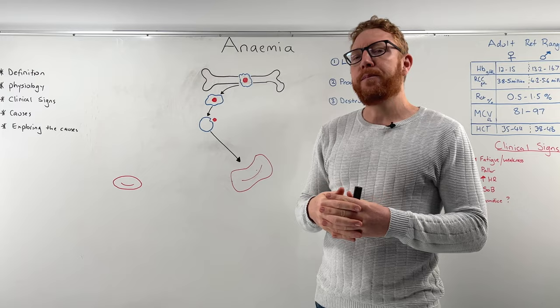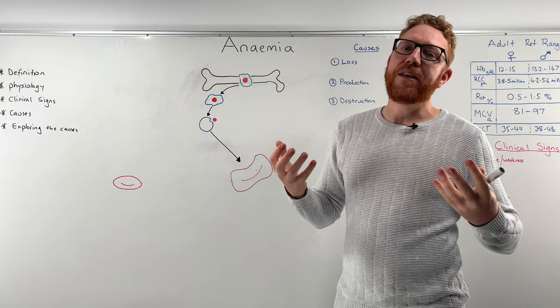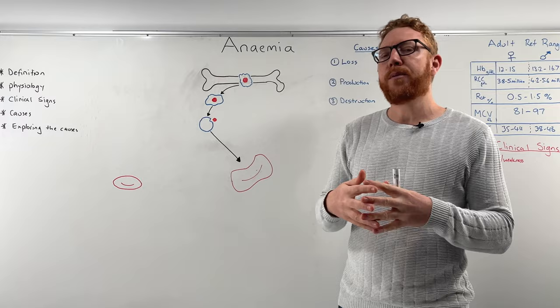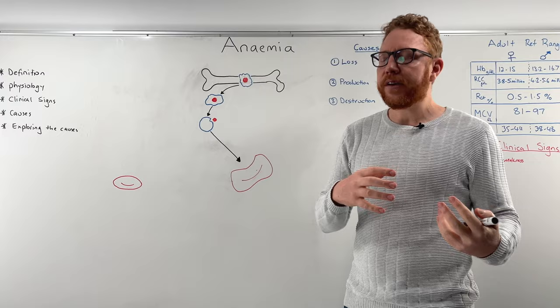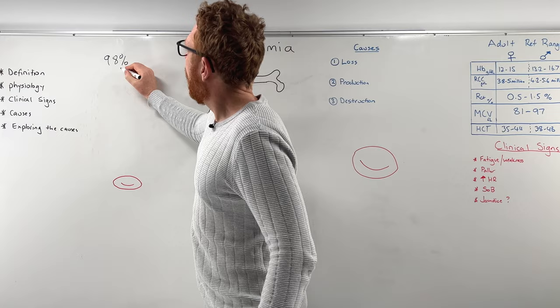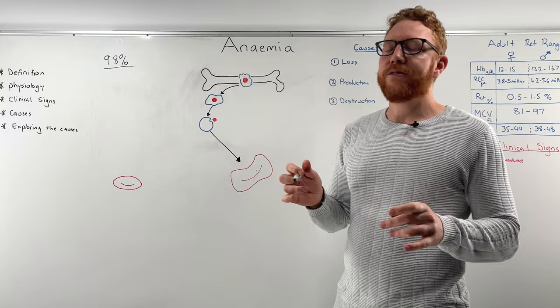The definition of anemia is a reduction in the oxygen-carrying capability of the blood. Blood carries oxygen to our tissues and cells — all 30 trillion cells in the body need oxygen to make ATP. Of the blood, 98% of oxygen is carried on red blood cells, so red blood cells are vitally important.